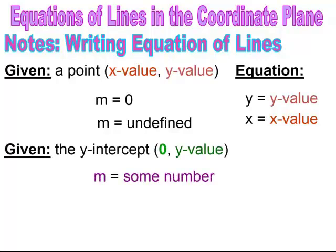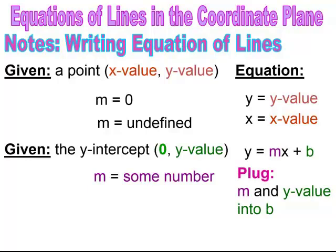If you're given the y-intercept and the slope, you can write the equation of the line using that information. Remember: when you're given the y-intercept, 0 is the x value. So if an ordered pair has 0 in the x spot, you have the y-intercept. You plug the slope into m and the y value into b in y equals mx plus b.